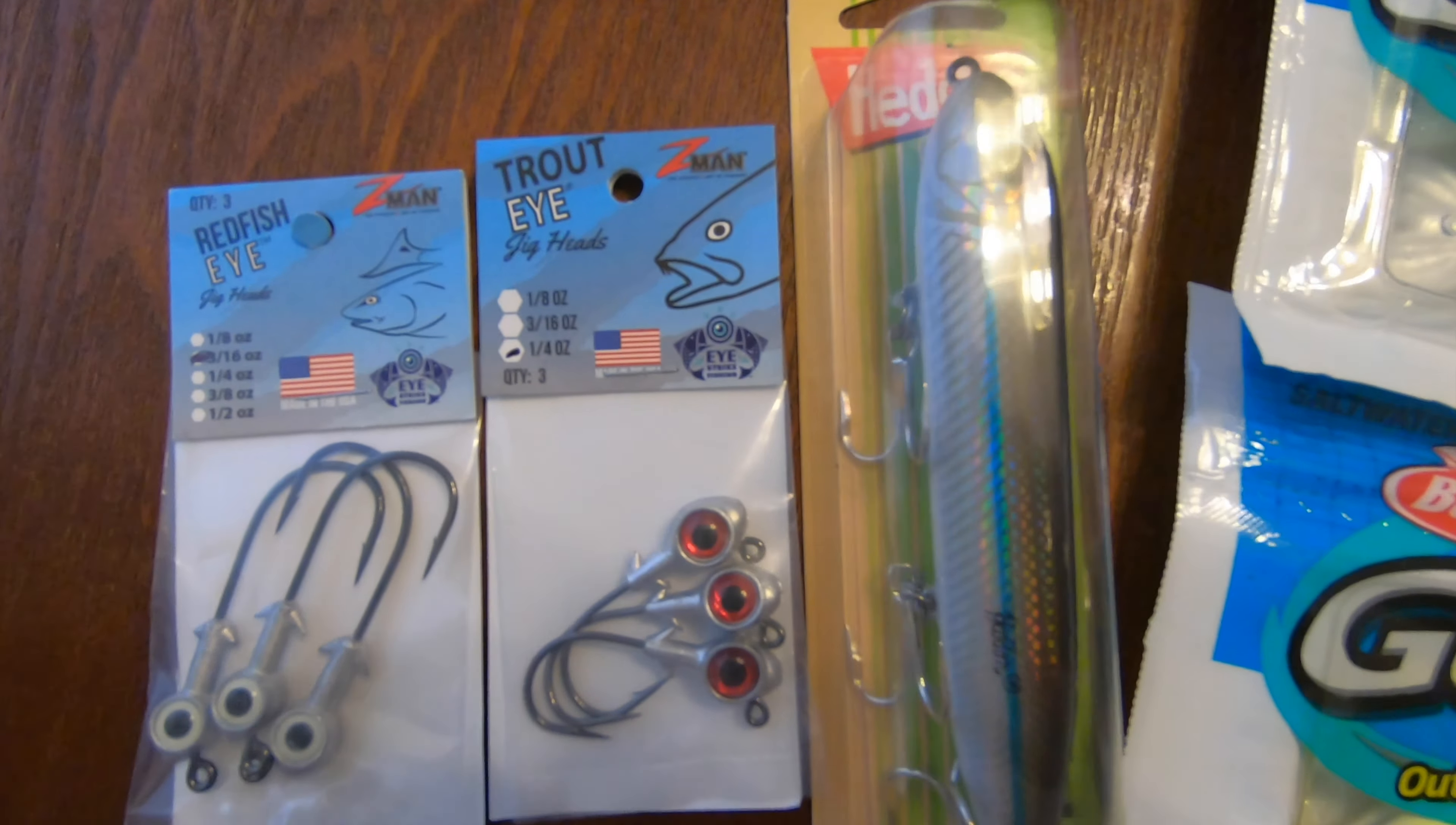Step one of the improved clinch knot is to run your leader through the hook eyelet. You're going to leave yourself plenty of tag end. Step two is we're going to twist five times. One, two, three, four, five.